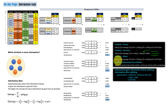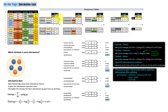The expected information gain for the outlook attribute covers the three subsets: five cases of sunny, four overcast, and five rainy, all out of 14. This equals five over 14 times 0.971, plus four over 14 times 0, plus five over 14 times 0.971. When we add all these probabilities together, it equals 0.694.